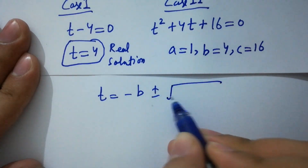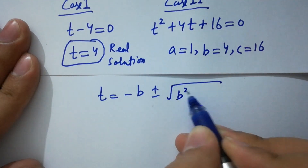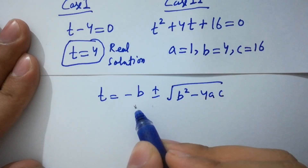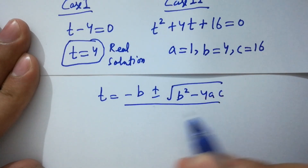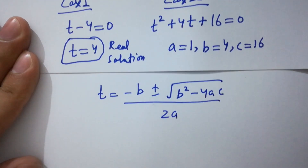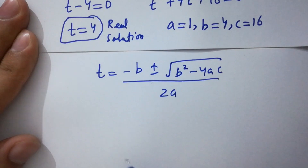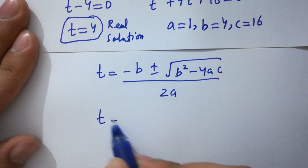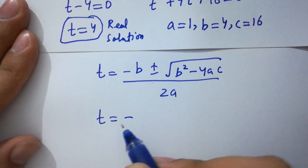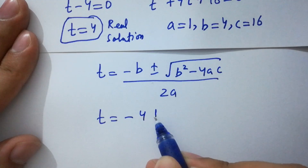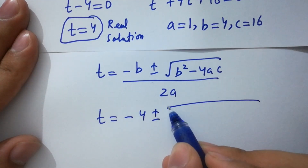t equals minus b plus or minus square root of b squared minus 4ac over 2a. Now putting in the values: t equals minus b, which is 4, plus or minus square root of...